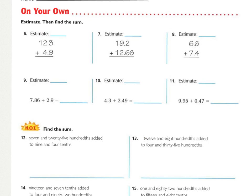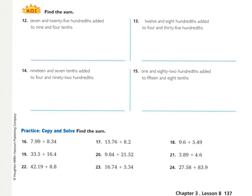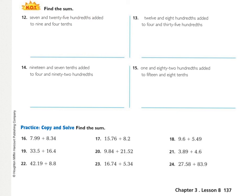Briefly going over the On Your Own section: the first part is exactly like the Share and Show — I expect to see estimates. The bottom part is the hot problems, which are word problems, so they just want you to set up the problem that the words tell you to do. Down at the bottom it says copy and solve — if you need extra paper you may come see me. You now know how to line up your decimal and use the correct place value positions to add your decimals.